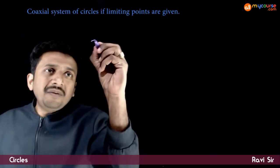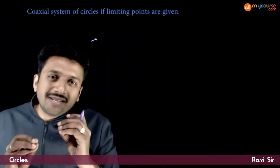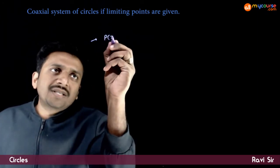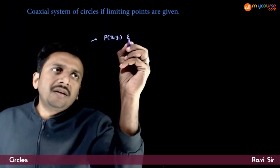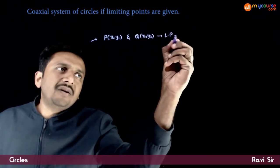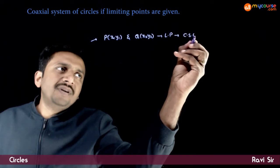If the limiting points of a coaxial system of circles is given to you, let P(x1, y1) and Q(x2, y2) are the limiting points of a coaxial system of circles.